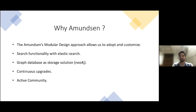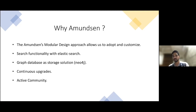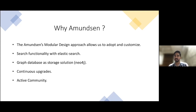Starting with Amundsen's modular design — it's very important when adopting an open source project that the design allows easy customization. Amundsen's modular design and simple Python code is very easy to understand. Next is search functionality, which was our key requirement — Amundsen provides this, and Elasticsearch is one of the best solutions for search. Similarly with graph databases: when dealing with datasets and their relations, a graph database is the best solution to represent this. Amundsen also provides continuous upgrades enabling new features, and has an active Slack community where queries can be resolved.